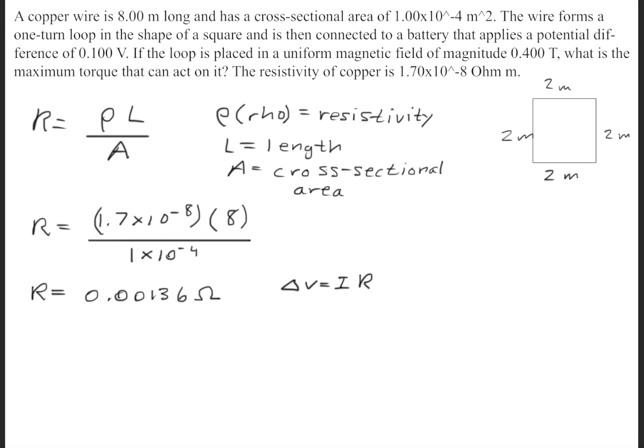Next we use Ohm's law so that we can find the current, and we'll get a current of 73.5 amps.